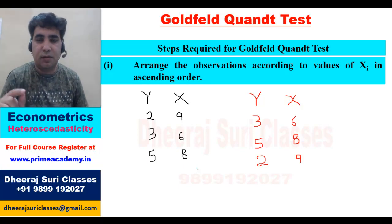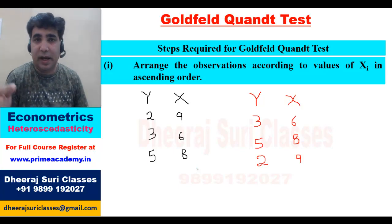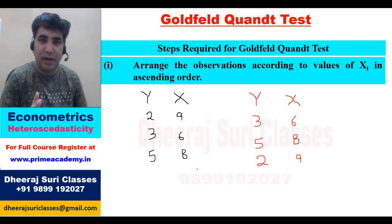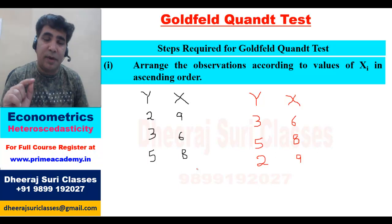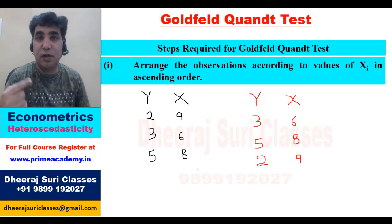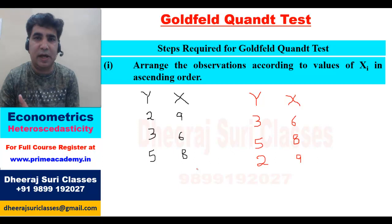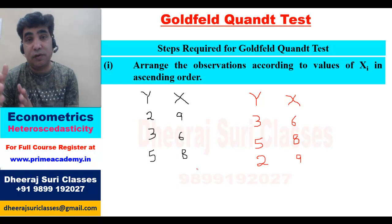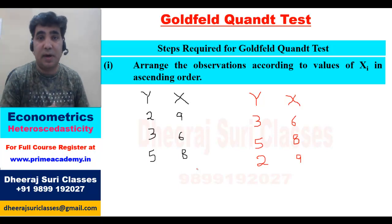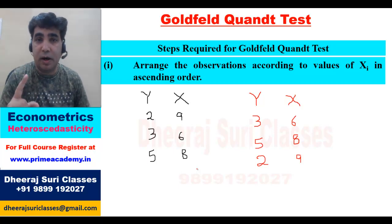We have y values and corresponding x values. We arrange the data in ascending order by x. The smallest x value is 6, so we take that first; next is 8, then 9. Correspondingly, we adjust y values: along with x=6, y=3; with x=8, y=5; with x=9, y=2. If there are more than one explanatory variables, arrange according to the variable whose error variance you suspect is positively related.